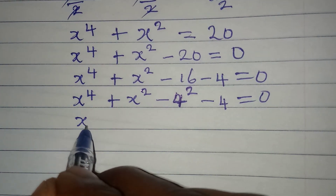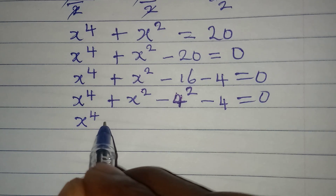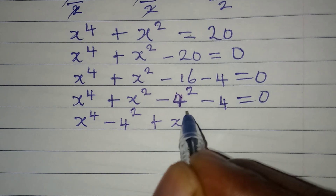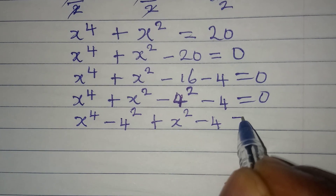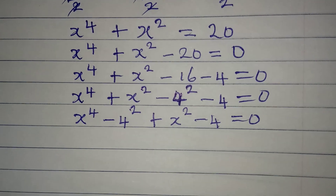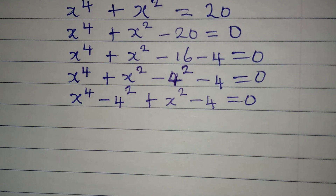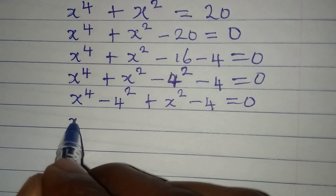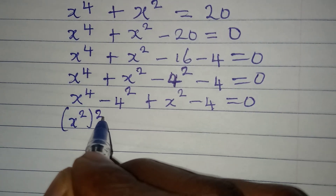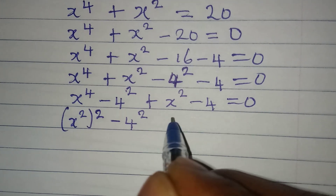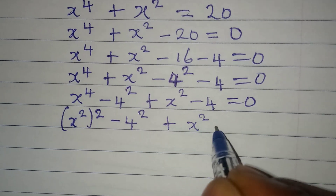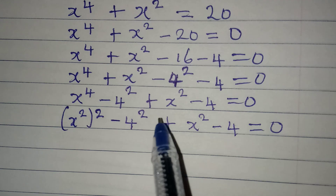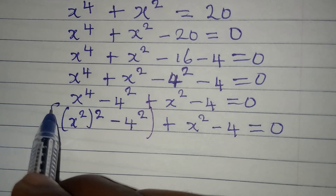Let's rearrange this: we have x to the power of 4 minus 4 to the power of 2, then plus x squared minus 4, equals 0. I'm rearranging so I can factorize. This can also be written as x squared to the power of 2, minus 4 squared, plus x squared minus 4, equals 0.